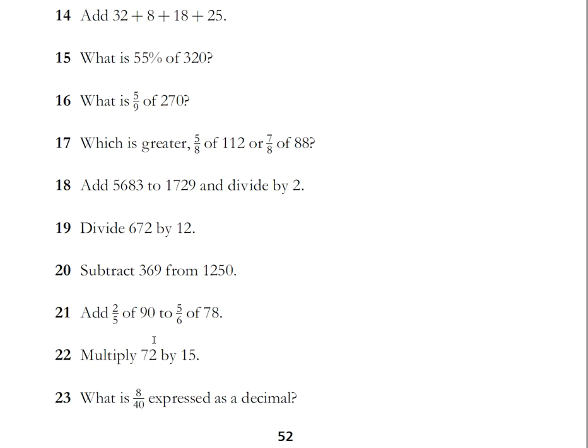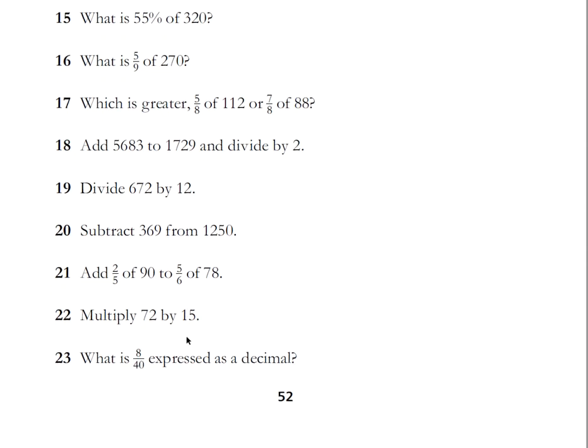Subtract 369 from 1250. Let's take the 300 off, 950, let's take 69 off, 881. Add 2/5 of 90 to 5/6 of 78. 90 divided by 5 is 18, 2/5 is 36. 78 divided by 6 is 13, so 5/6 will be 65, so that'll be 101 all up. Multiply 72 by 15. This is a really easy one for me the way I do it, I just do 72 times 10 plus 72 times 5, so it's 1080. See how it's a nice round number - 720 is two revolutions so you should know that pretty well.